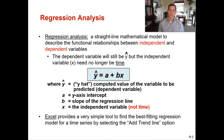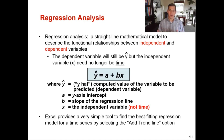The big difference between linear regression analysis and the least squares method is that our independent variable is no longer time. We're now able to look at two different data points — and they don't have to be time — to see if there is a linear trend that will help us make a forecast.